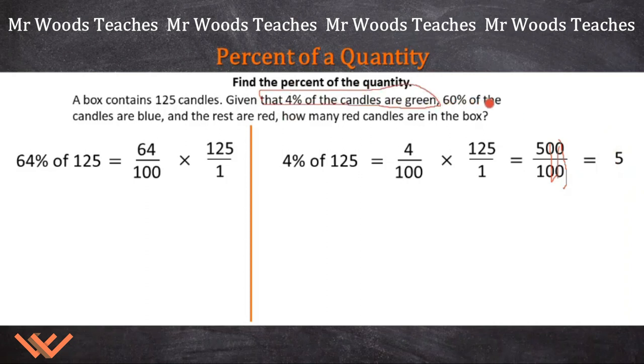Now we're looking for the number of blue candles. Let's set that up the same way. This time we have 60% of 125. So we're going to have it the same way, 60 over 100 times 125 over 1. And again, that's a little daunting, but I think you can understand how we're doing this. I explained it before as well.